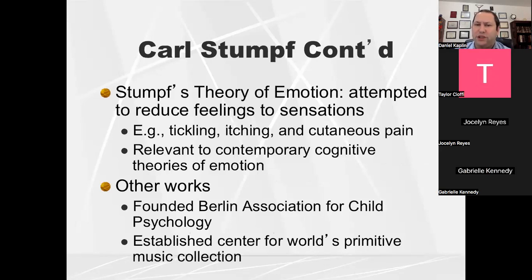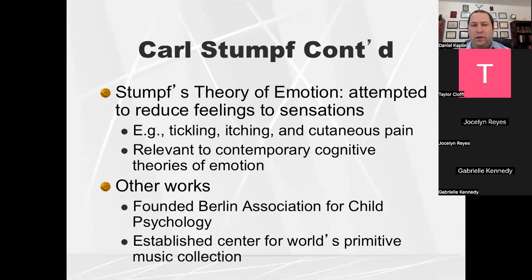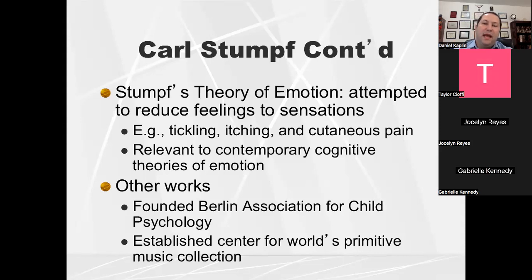Stumpf also had his own theory of emotions. He felt that all emotions can be reduced to feelings of sensations — for example, a tickle, an itch, or skin-based pain. These triggers can induce some kind of emotional output. Itching might induce the emotion of frustration; cutaneous pain might trigger anger. It goes back to some sensation that you experienced. There are different arguments as to theories of emotion, and if you look at more contemporary cognitive theories, they incorporate some of what Stumpf was talking about.